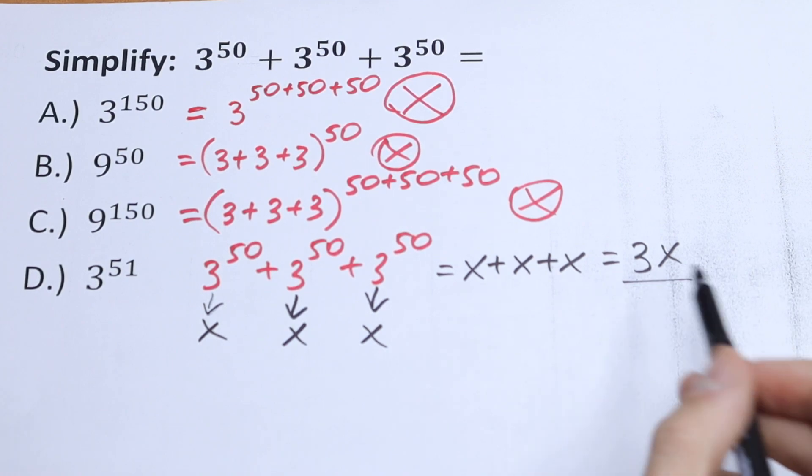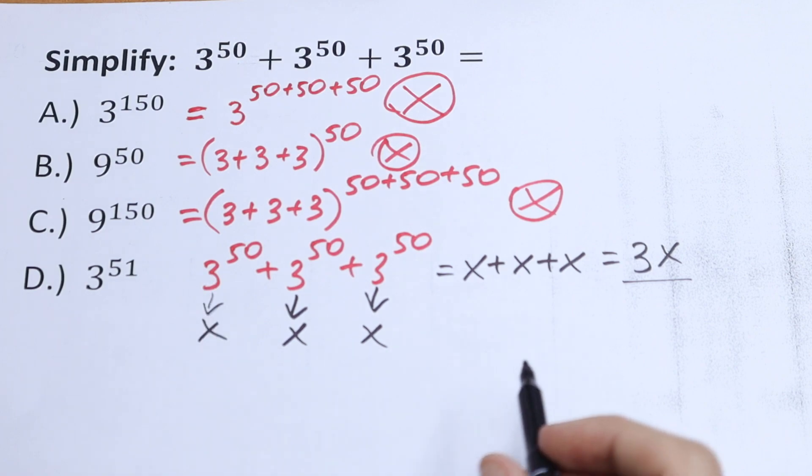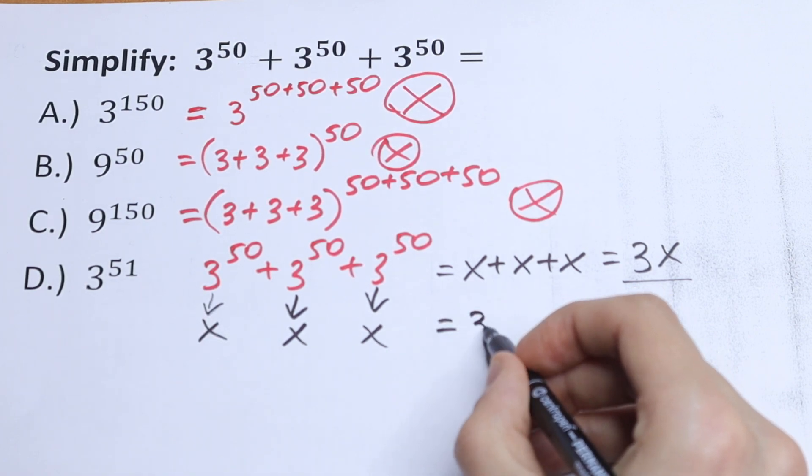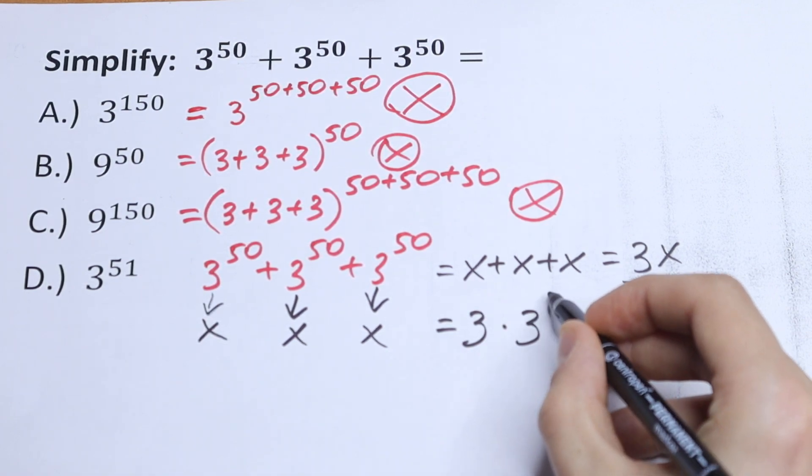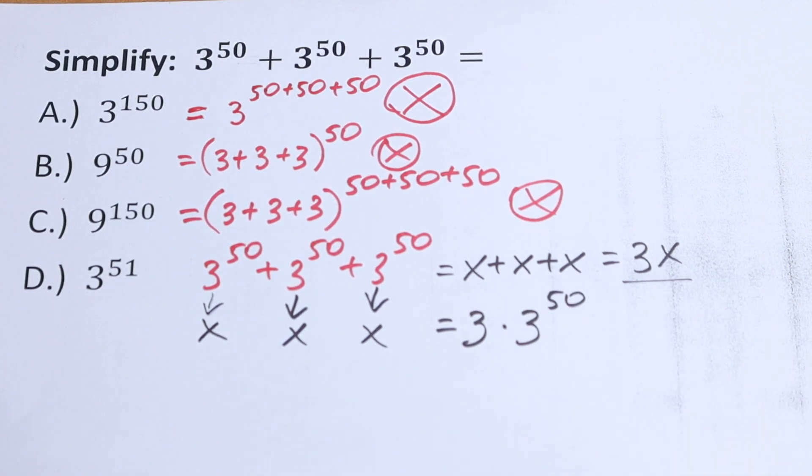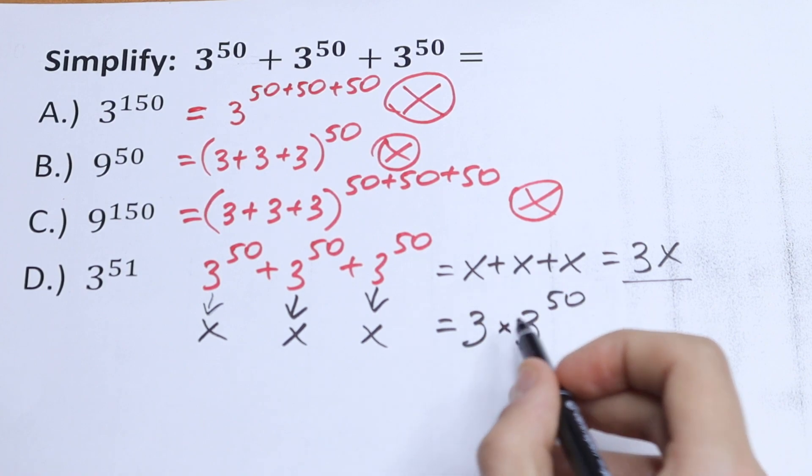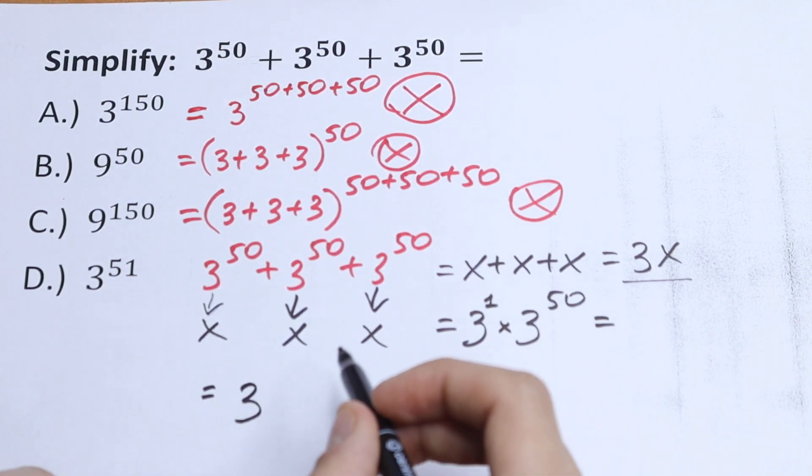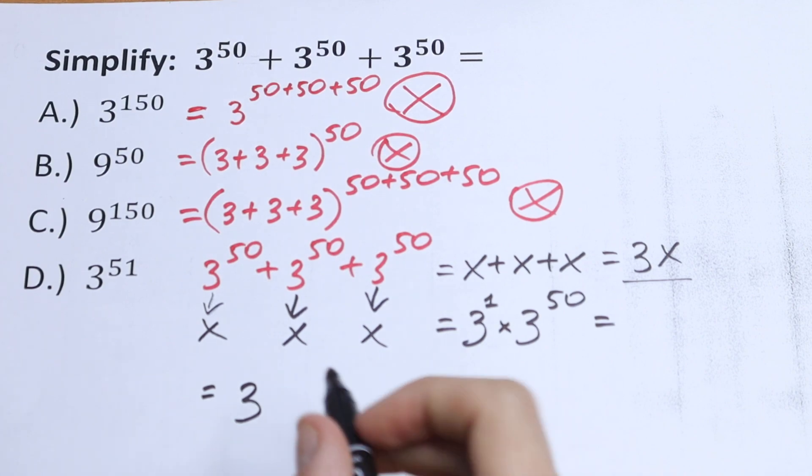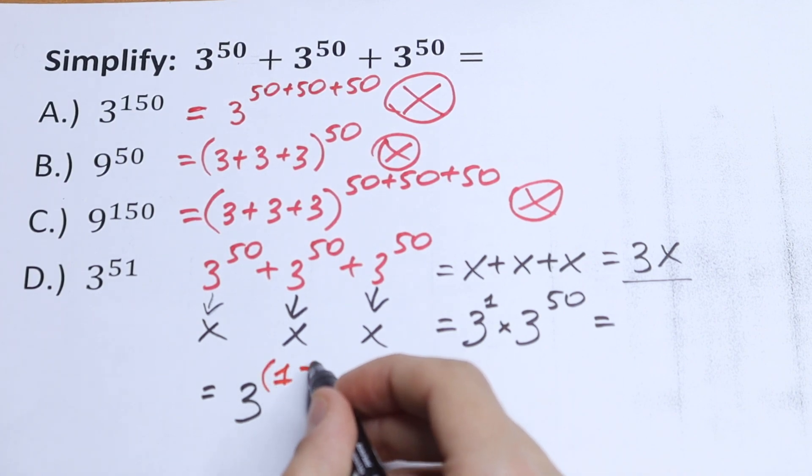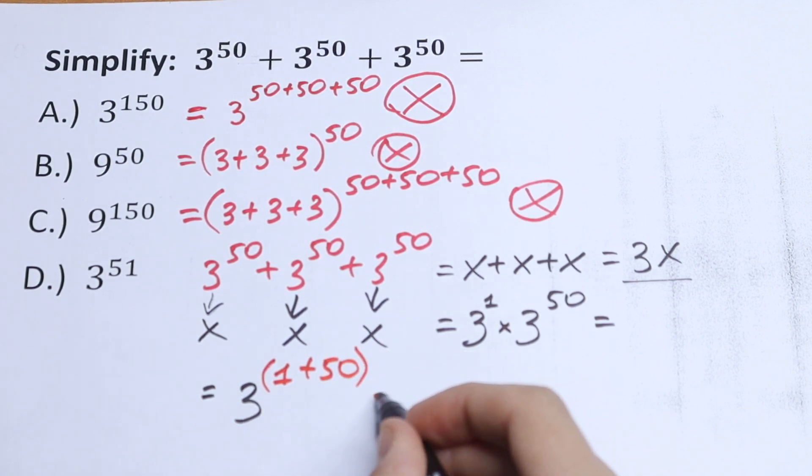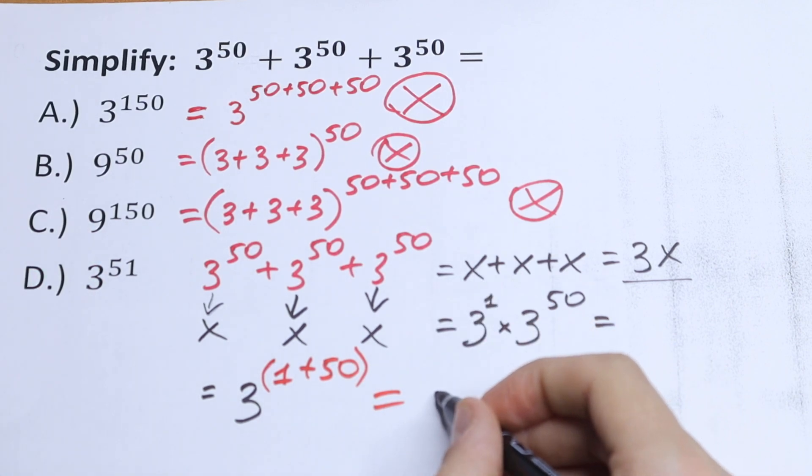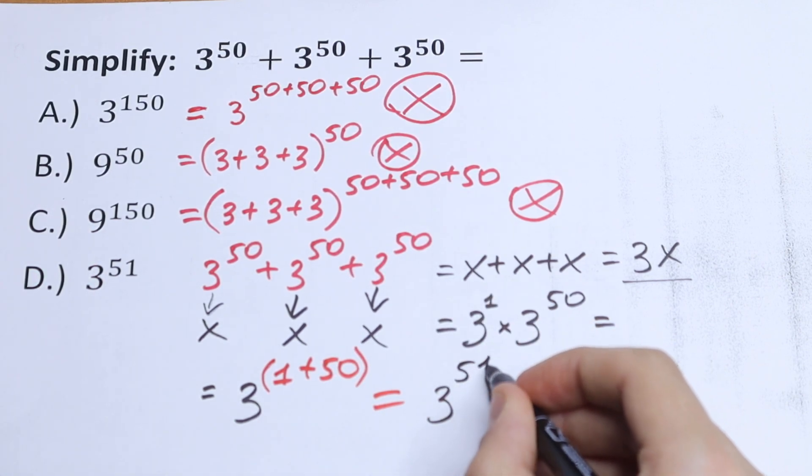What are we going to do next? We know that x is 3 to the 50th power, so we have 3 times 3 to the 50th power. We know the power rule: if we have the same base and different exponents with multiplication, we add these powers. As a result, we have 3 to the power 1 plus 50, which is 51. So we have 3 to the power 51.